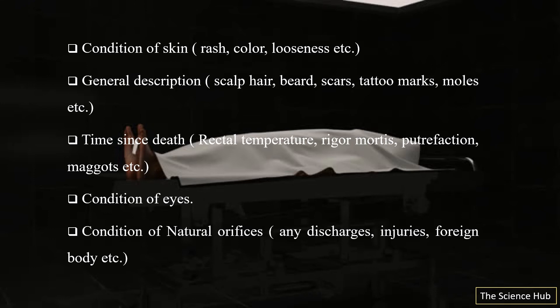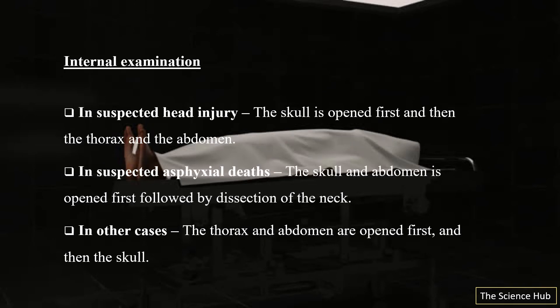The condition of natural orifices is checked — any discharges, injuries, or foreign bodies present. For internal examination: in suspected head injuries, the skull is opened first, then the thorax and abdomen. In suspected asphyxial deaths, the skull and abdomen are opened first, followed by dissection of the neck. In other cases, the thorax and abdomen are opened first and then the skull.